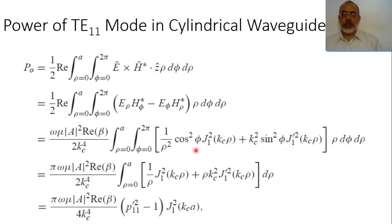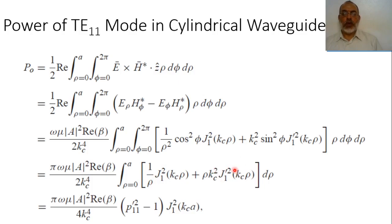The integration with respect to φ is very simple: cos²(φ) or sin²(φ) integrated from 0 to 2π gives π. The integration with respect to the Bessel function and its derivative is quite complicated, but from tables of definite integrals we can obtain a formula for the integration of these functions from ρ = 0 to ρ = A.